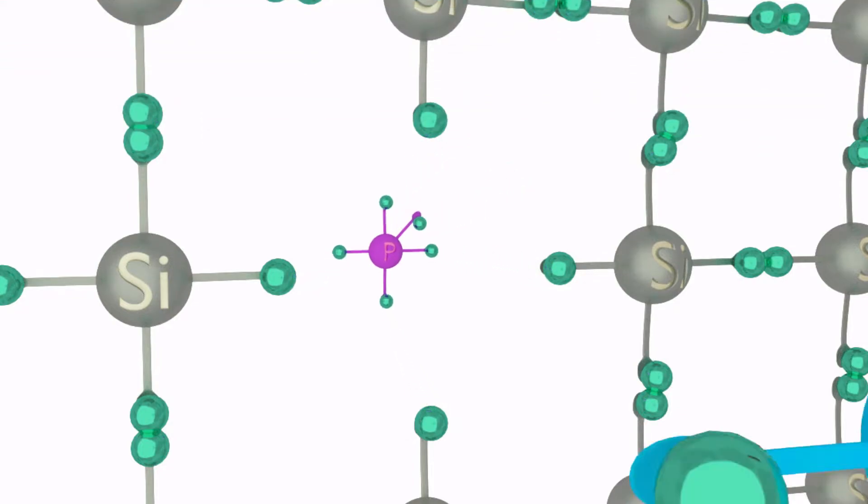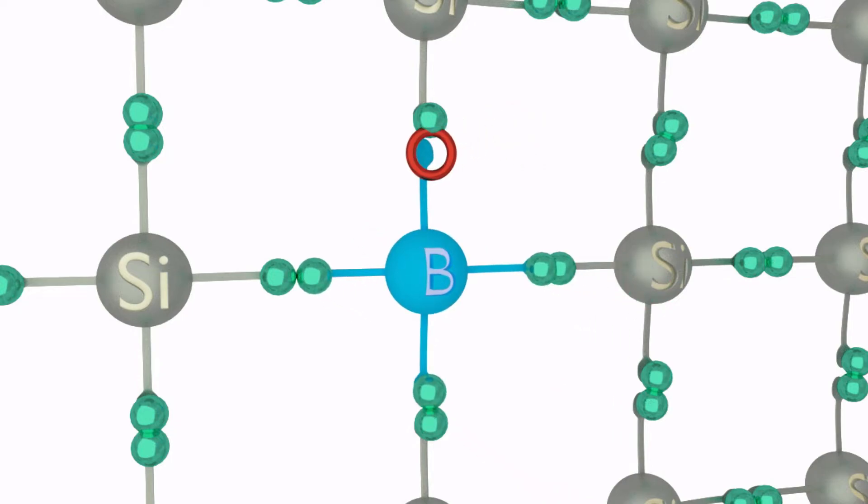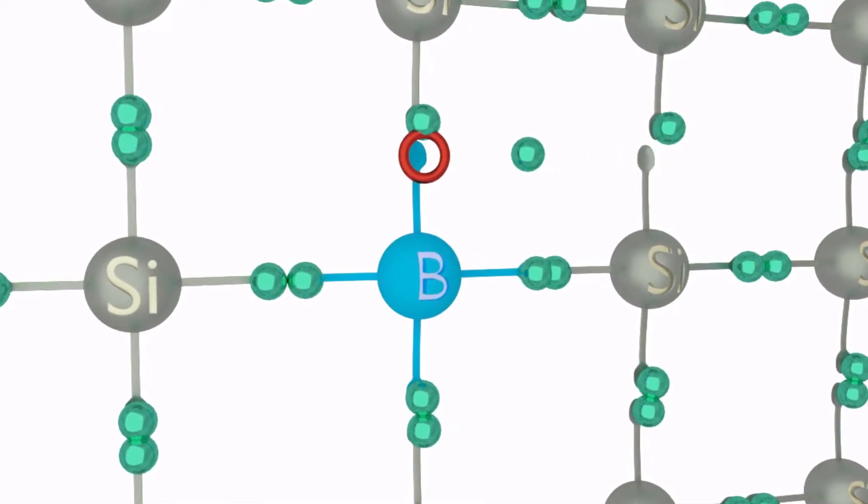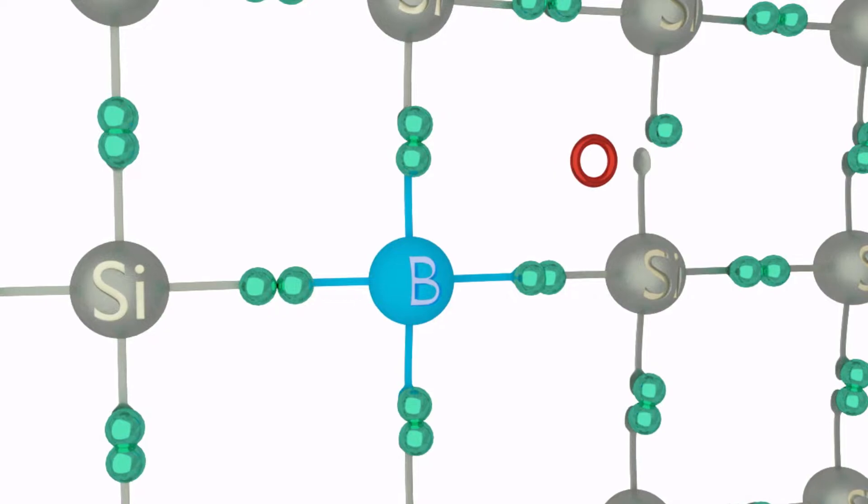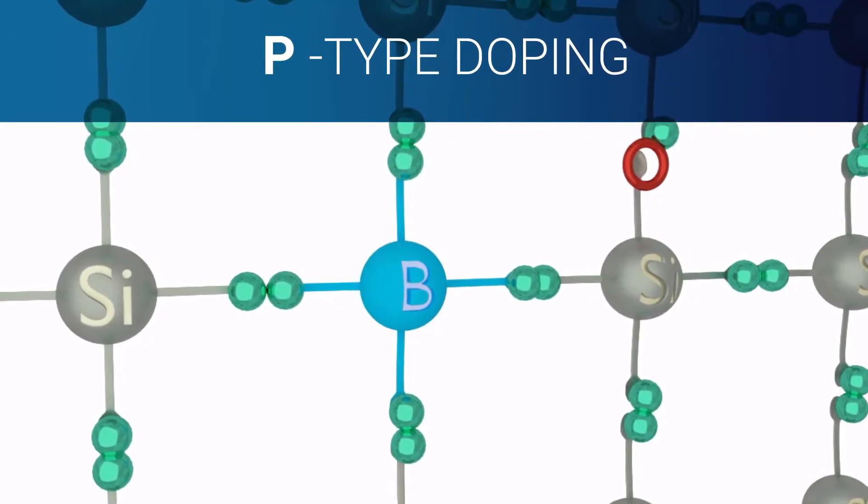On the other hand, if a boron atom is inserted into the silicon lattice that has only three valence electrons in its shell, a free space will be created for an electron. This space is known as a hole. And neighboring electrons can fill these spaces freely. This is known as P-type doping.